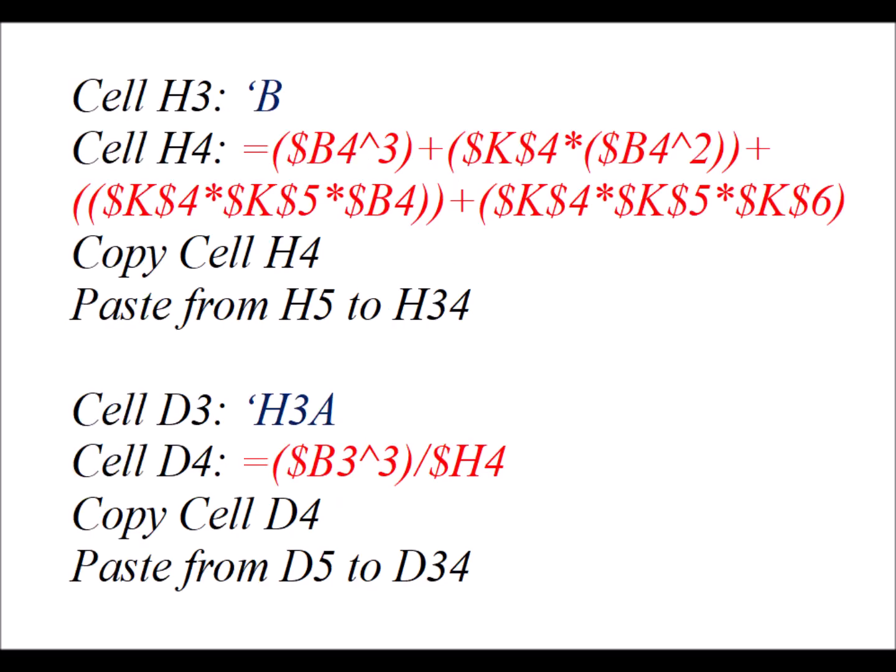In cell H3, we put the label B. In cell H4, we have this complicated formula. This is essentially the denominator for all of the alpha expressions. And we copy cell H4 and paste it from H5 to H34.